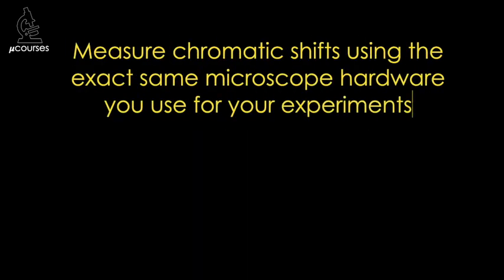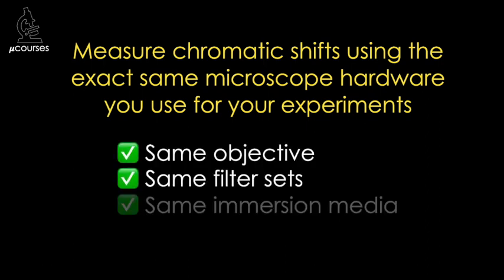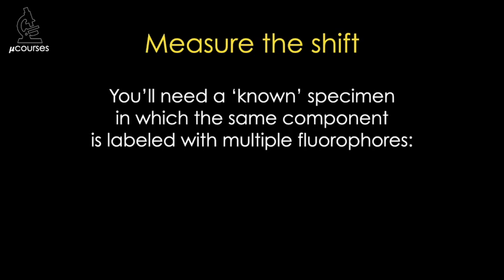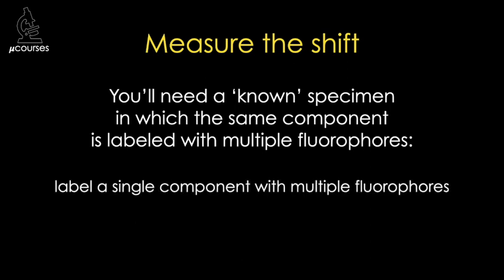Because chromatic shifts have several different sources, it's best not to take any chances. Measure chromatic shifts using the same exact microscope hardware you use for your experiments. To measure the shift, you'll need a known specimen in which the same component is labeled with multiple fluorophores. One option is to label one of your own specimens this way — say, by using a mix of two or more different secondary antibodies with a single primary antibody, and your standard specimen mounting conditions. This type of specimen, because of its similarity to your experimental specimen, may yield the most accurate measurement.